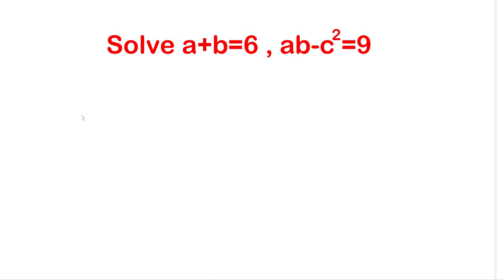This is an Olympiad problem. Solve a plus b equal to 6, ab minus c squared equal to 9. Here we have three variables, a, b and c, but we have only two equations. Then can we solve it? Yes, still we can solve it. So let us solve this.